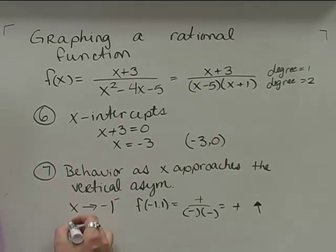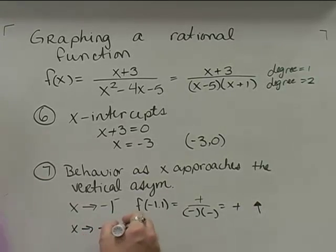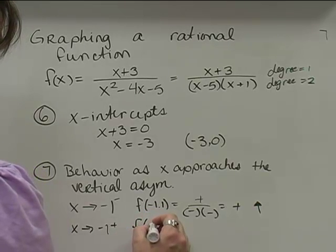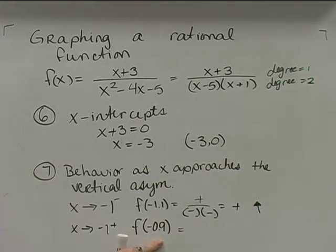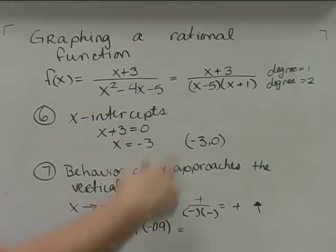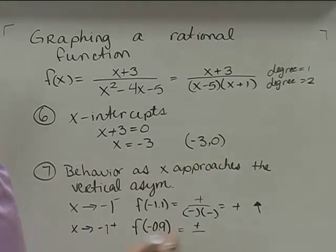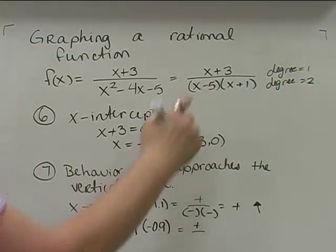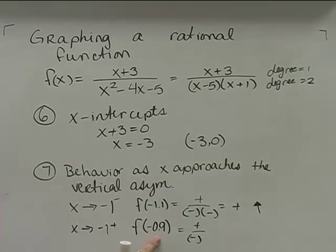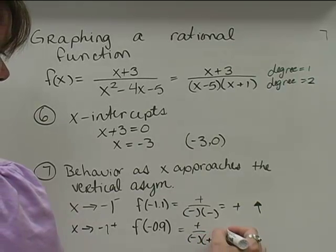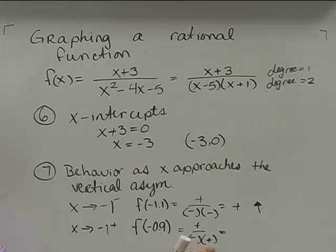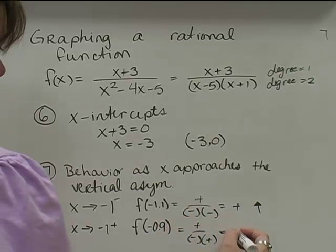Now I need to see what happens as x approaches negative 1 from the right-hand side. I'll choose a number close to negative 1 but slightly greater — negative 0.9. Putting negative 0.9 into the top gives a positive number. Putting it into the middle factor gives a negative number. Putting it into the last factor gives a positive number. So I have a negative times a positive, which is negative, divided into a positive — giving a negative number.